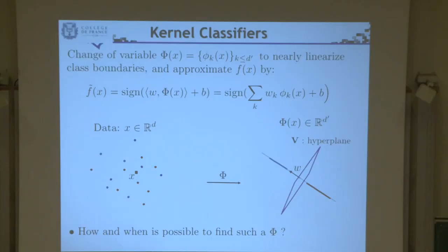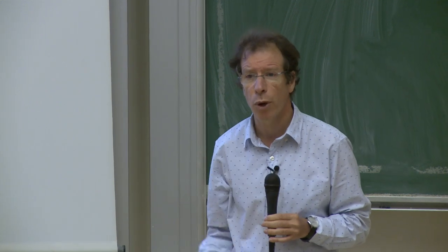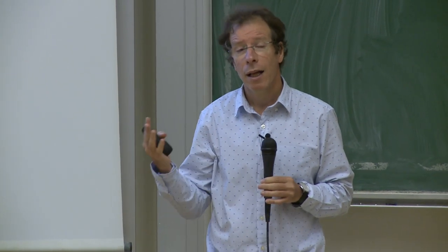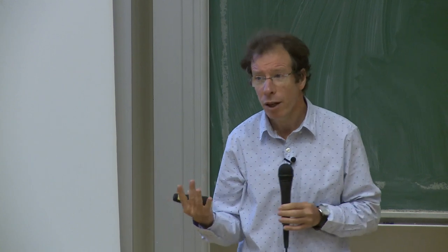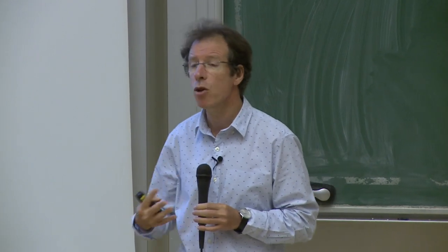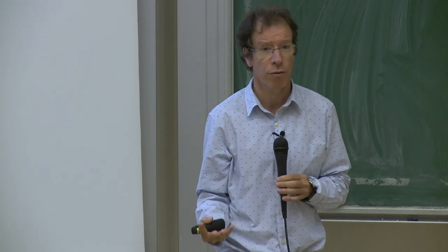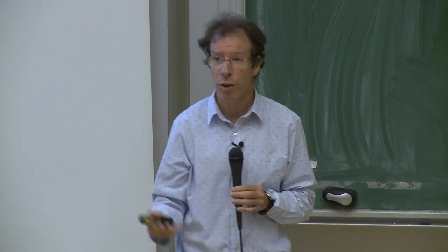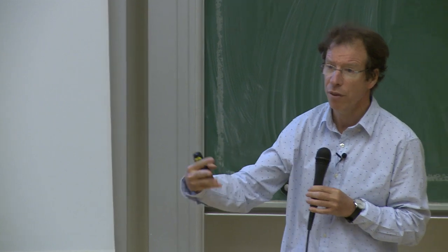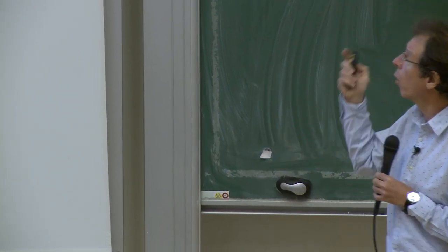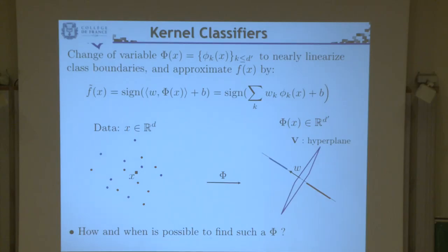Finding the hyperplane is relatively easy. What is very difficult is finding this miracle change of variable which separates the data. The regularity of the problem is hidden within the change of variable. There are basically two strategies: either you know your problem and know in advance the appropriate change of variable, or if the problem is complex, you learn the change of variable — and that's what neural networks are doing.